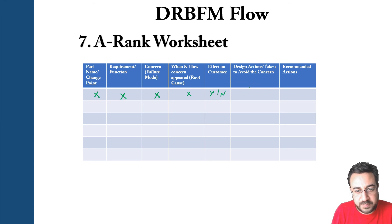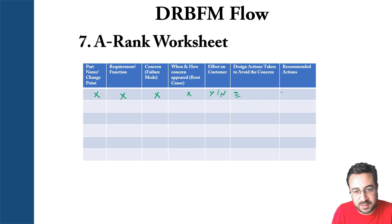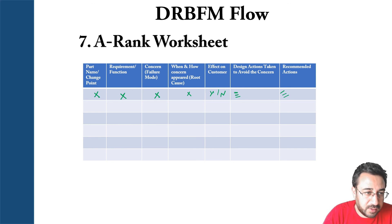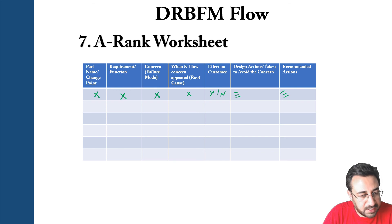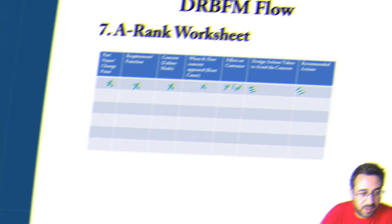You document how the concern affects the customer — yes or no, and why or why not. Then you record the design actions taken so far to avoid the concern and what is left to be done, listed as recommended actions. Your recommended actions represent what you think should be done, and the final solid word comes from the expert. All change points from your change matrix should be captured here in writing, with references to the numbers and call-outs from the visualization part of the DRBFM process.